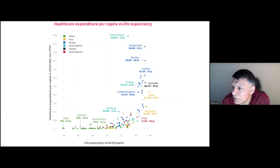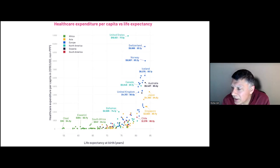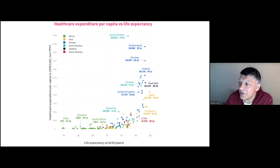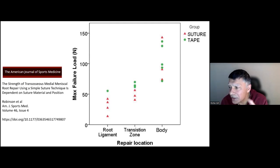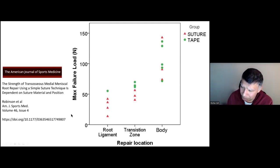Here's an example from Visual Capitalist — a really nice plot explaining life expectancy at birth as a function of healthcare expenditure, with countries listed, annotation, and a lot of information encapsulated clearly. In one of our studies on the strength of transosseous medial meniscus root repair, looking at two different types of material in different positions, if you've got a relatively small number of repeats it's better to just plot the raw data rather than averages, and be very clear about labelling the axes.